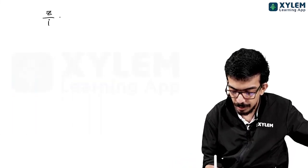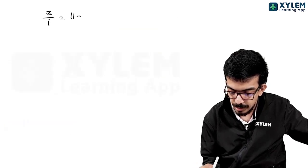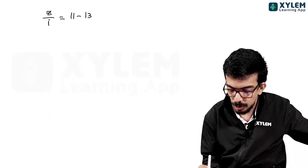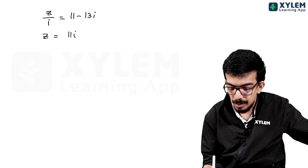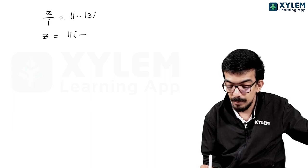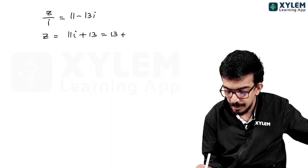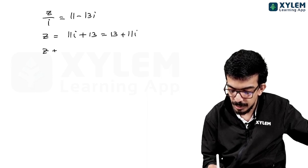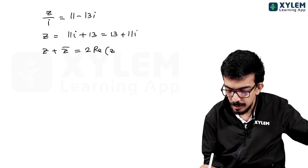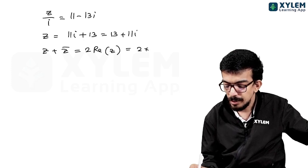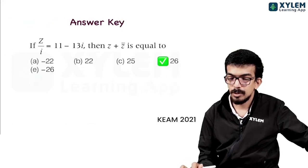Z divided by i: the value of Z1 = 11 - 13i divided by i. Multiply to get Z equal to 11i minus 13i²  which is 13 plus 11i. Now Z plus Z-conjugate equals two times the real part of Z, which is two times 13, giving 26. So 26 is the right answer.